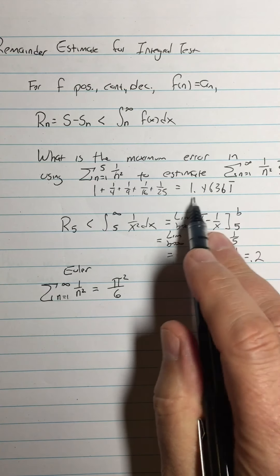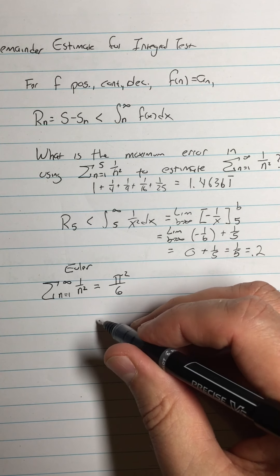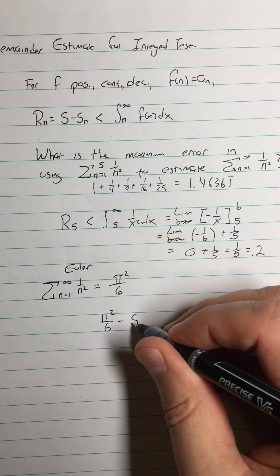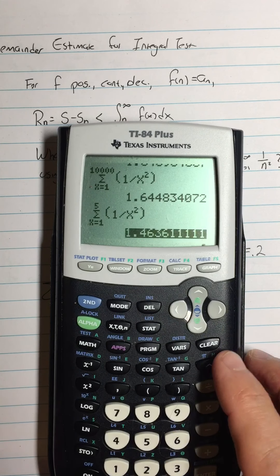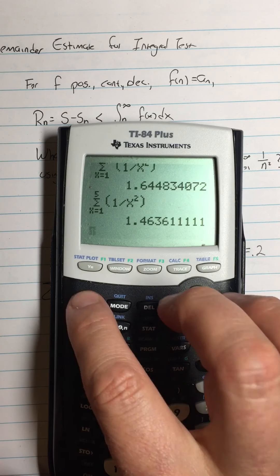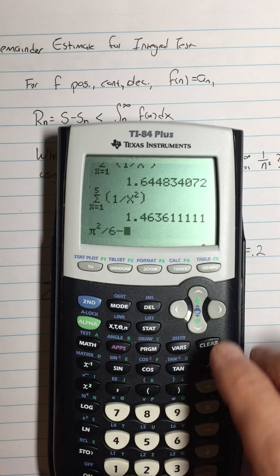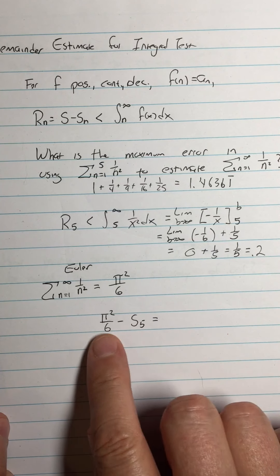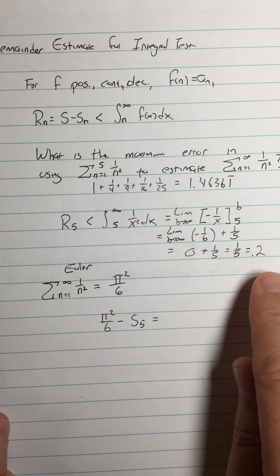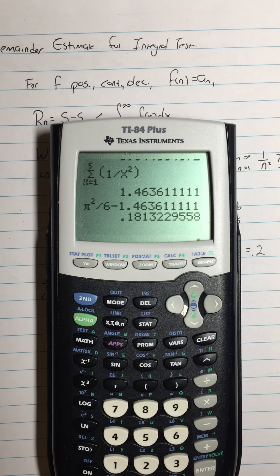So is this sum really within 0.2 of pi squared over 6? Let's see. So what is pi squared over 6 minus S sub 5? So if I do that, here's my S sub 5 right there. So I'm going to do pi squared over 6 minus that number. So according to our theorem here, the difference between my estimate and the actual value has to be less than 0.2. It's 0.18. Yep.